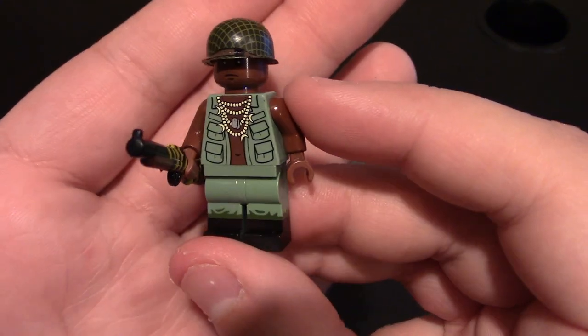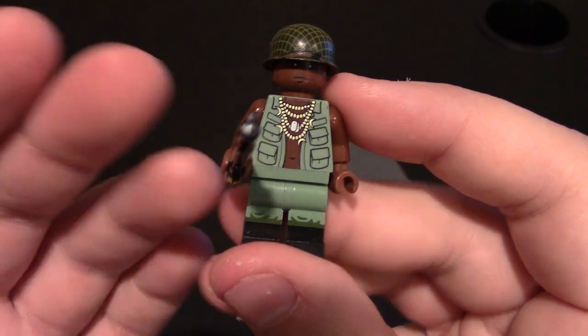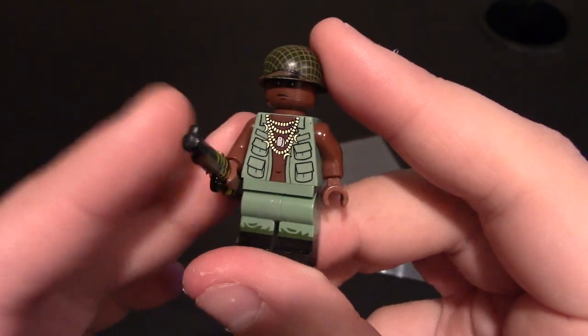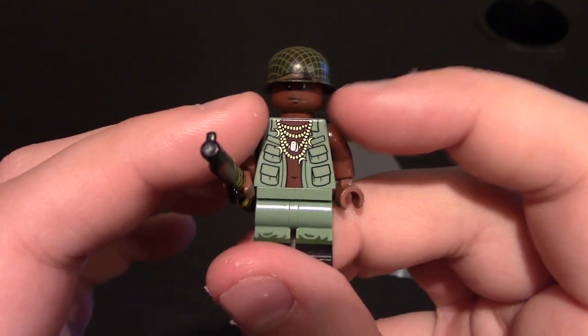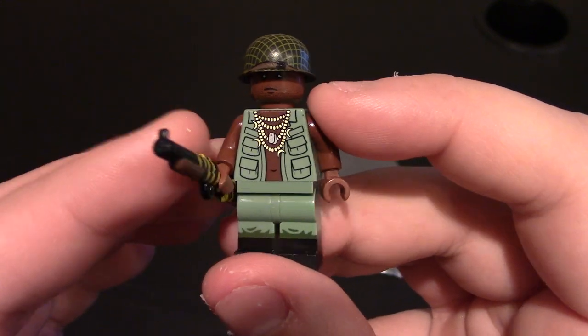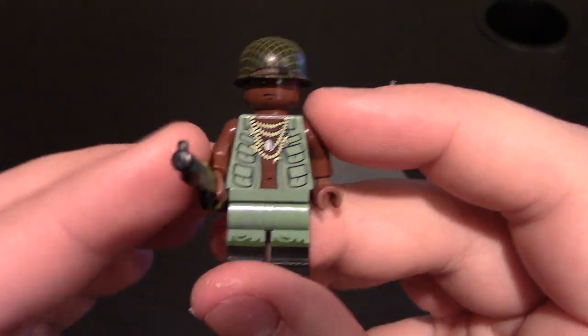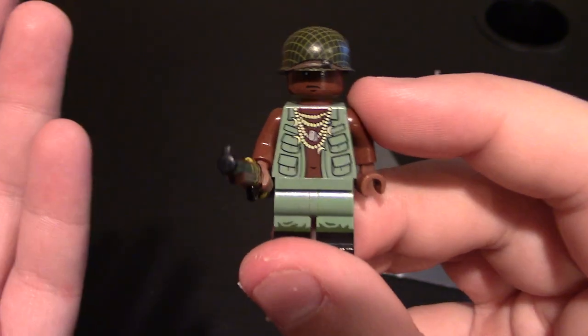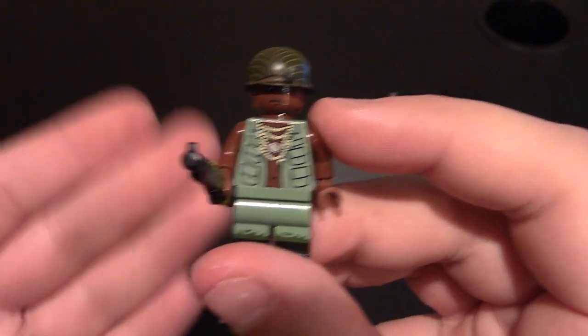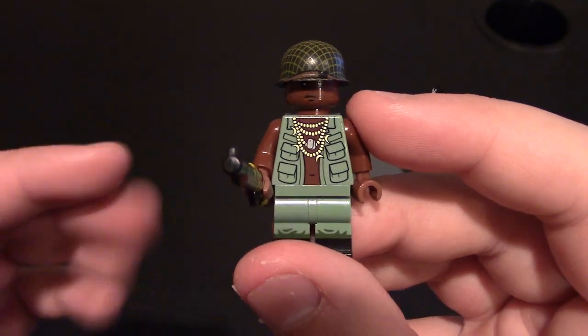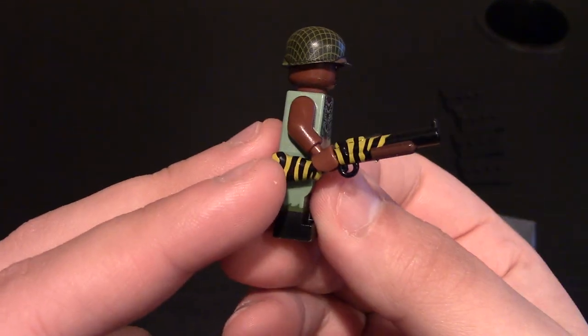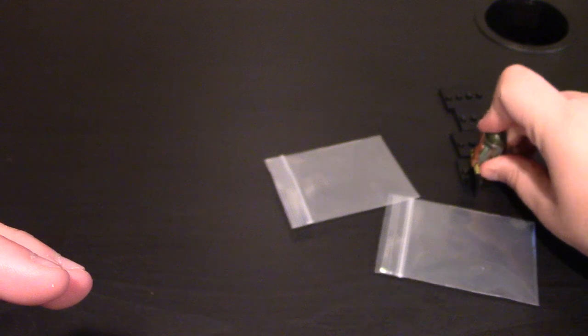So this is the Grenadier. Overall I really like this minifigure. I might make a couple more from their website with this style. They do have different flesh tones with the face and other faces that could go with this torso, but I wanted to follow their picture and make the exact same minifigure. That is the Grenadier: helmet, head, torso, legs, and the grenade launcher M79.